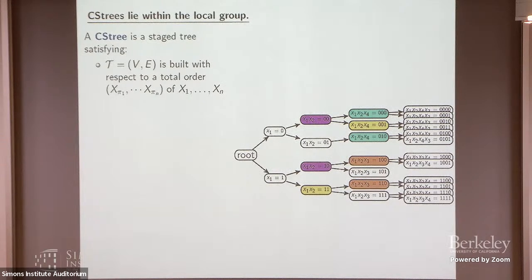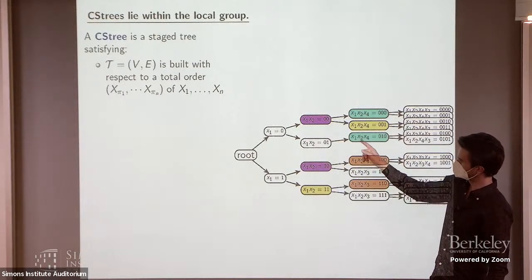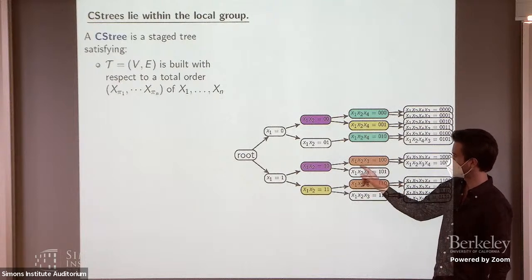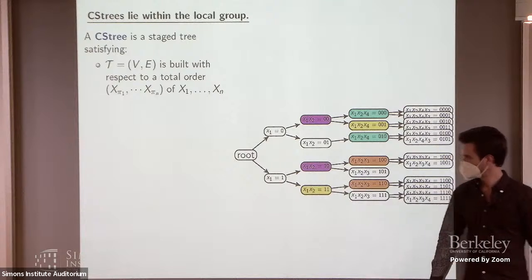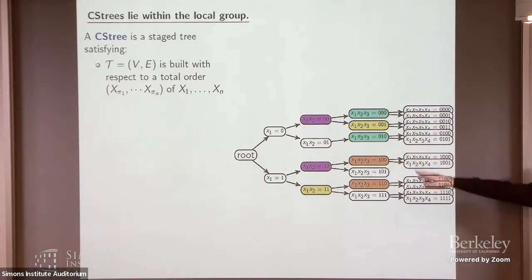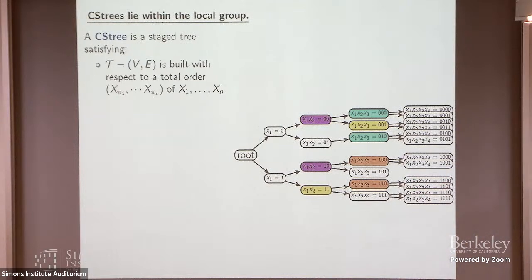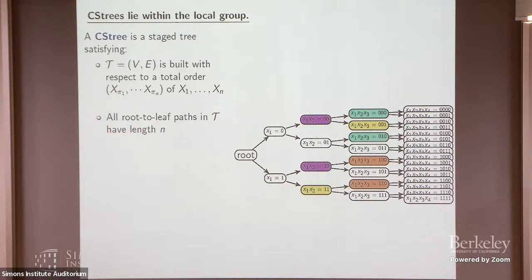The first thing we need to do is impose that we're not allowed to change the partial order or total order of variables within different contexts. So we need to abide by some total order of the variables for now. We're also not going to allow truncation right now — we need to assume that all root-to-leaf paths have length n, so there are no unobserved outcomes for now.